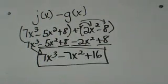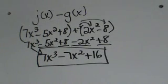Just remember to distribute into the back function. Now let's look at multiplying. The third operation is multiplying two functions together. We are going to take the f of x function and multiply it times the h of x function. We have some monomials, binomials, and even a trinomial up here, so we have to be careful and remember how to multiply functions together.